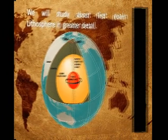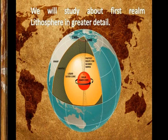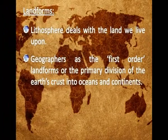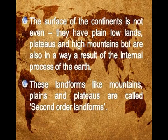We will study the first realm, the lithosphere, in greater detail. The first order landforms are the primary division of the earth's crust into oceans and continents. The surface of the continents is not even; they have plains, lowlands, plateaus, and high mountains, which are also a result of the internal processes of the earth. These landforms like mountains, plains, and plateaus are called second order landforms.